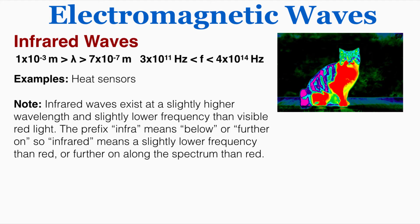Infrared waves can be used for heat sensors. You can see I've given the range of wavelengths and frequencies. A quick English lesson, the prefix infra means below or further on, so infrared means a slightly lower frequency than red or further on along the spectrum than red, so we're about to come to the optical section.